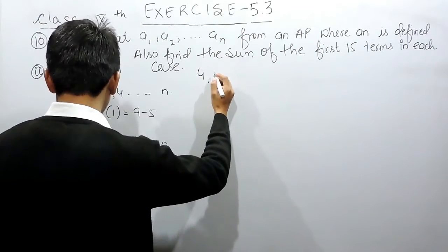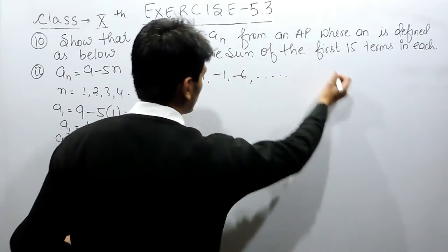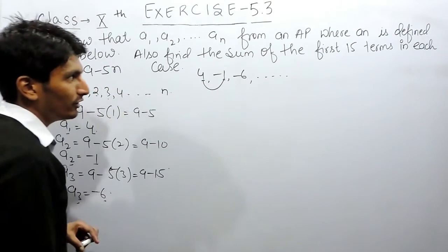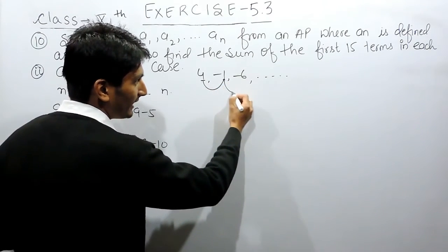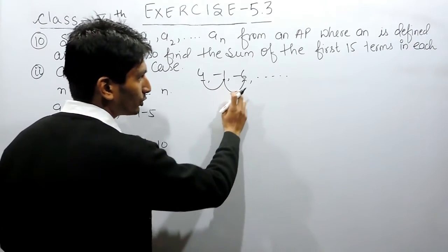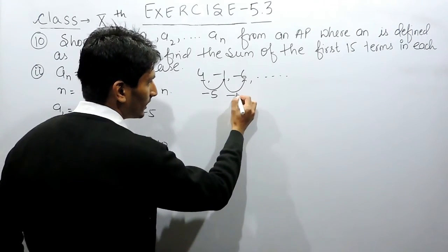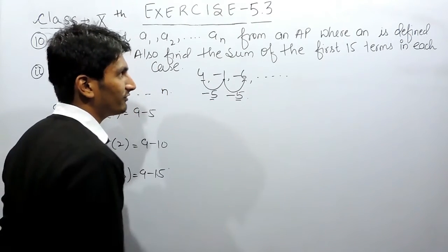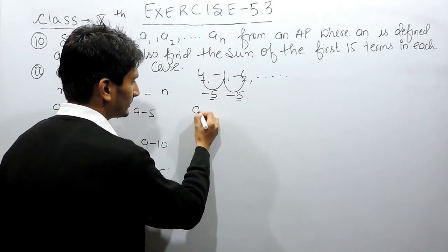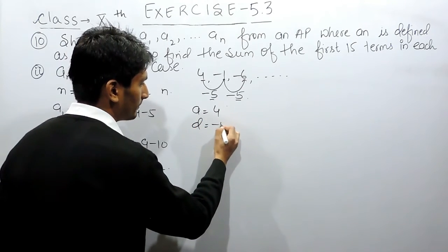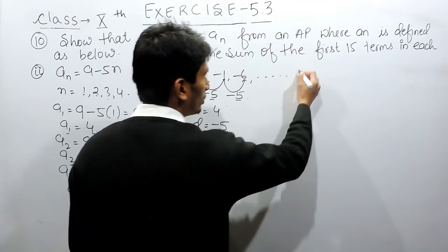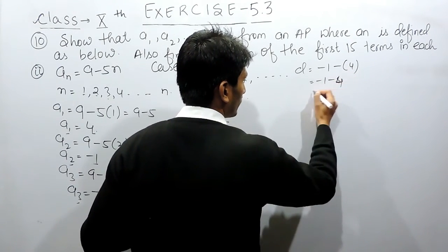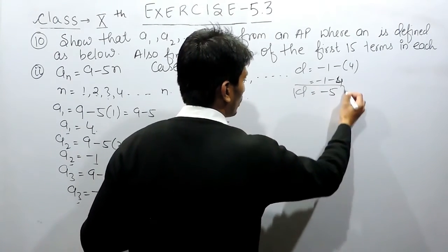So if we make the series of these numbers, it will continue. Clearly, I have subtracted 5 from the first term to get the second term, and again subtracted 5 from the second term to get the third term. So the common difference here is minus 5 and this is constant. This will form an AP with first term 4 and common difference minus 5. You can verify: subtracting the first term from the second term gives minus 5.